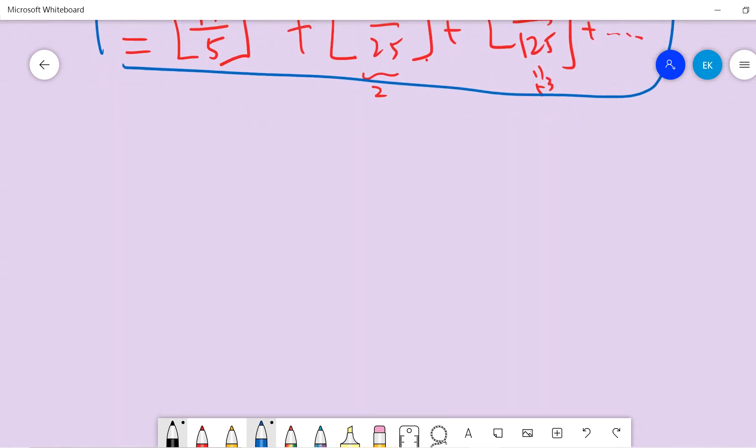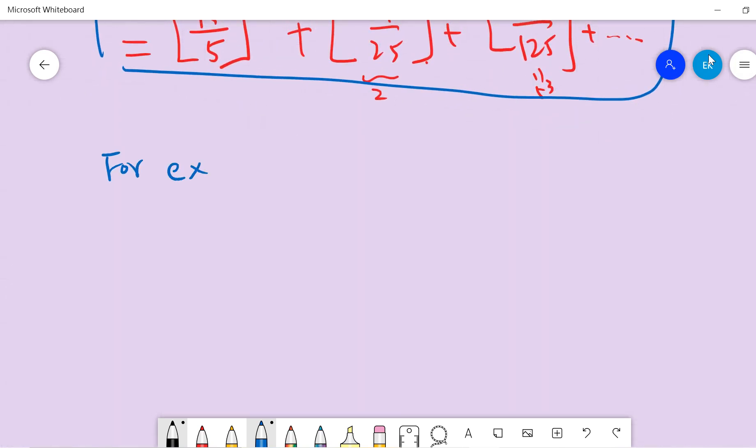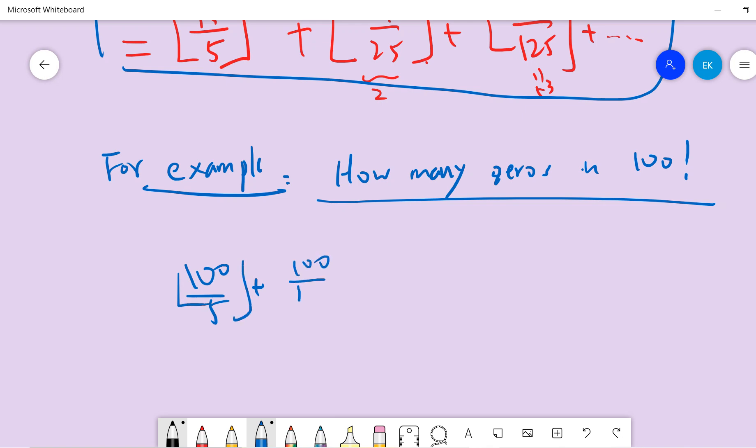For example: How many zeros in 100 factorial? This is a common interview problem. If you use the formula, we have 24 zeros. Now we go back to the GRE problem.